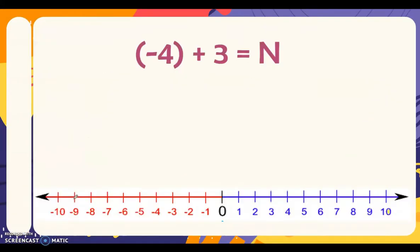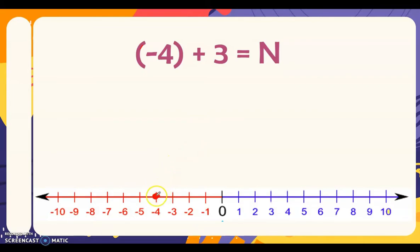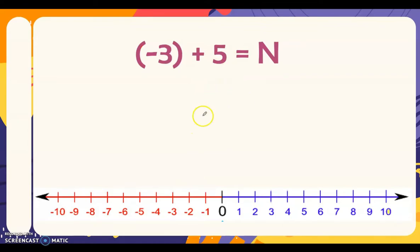Let's have an example. We have negative four plus three equals n. First, we locate the first addend, which is negative four. Then we add three, which is positive, so we move to the right three times: one, two, three — we end up at negative one. Therefore, negative four plus three is equal to negative one.